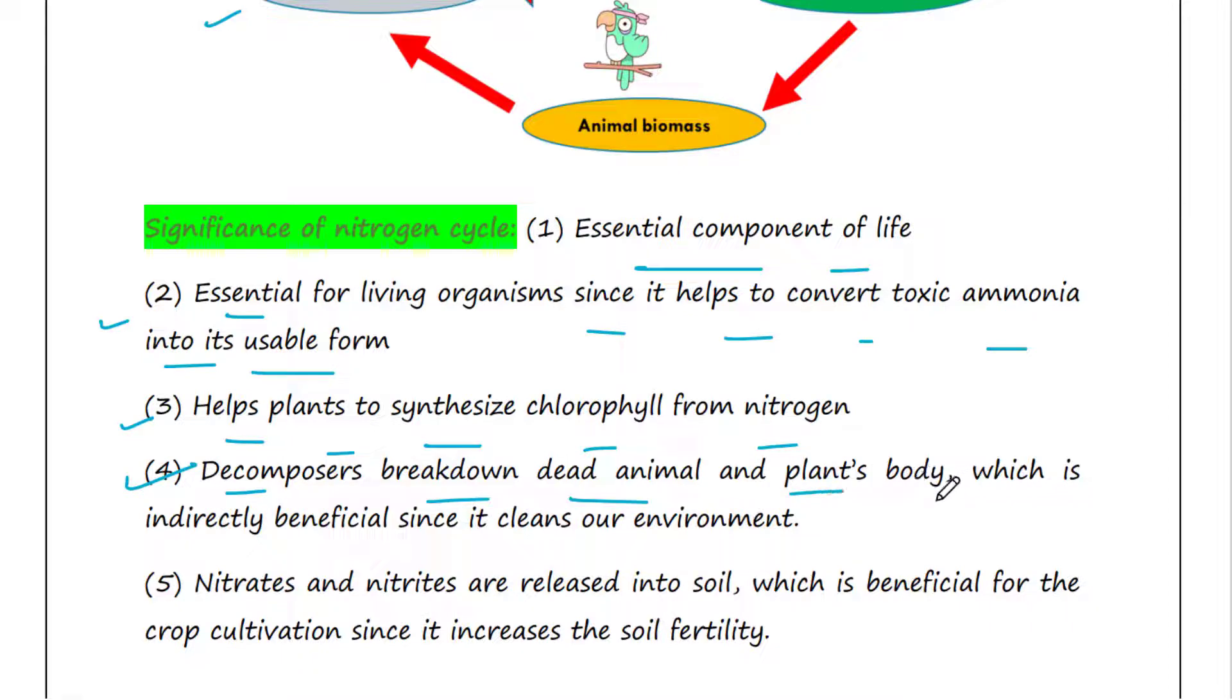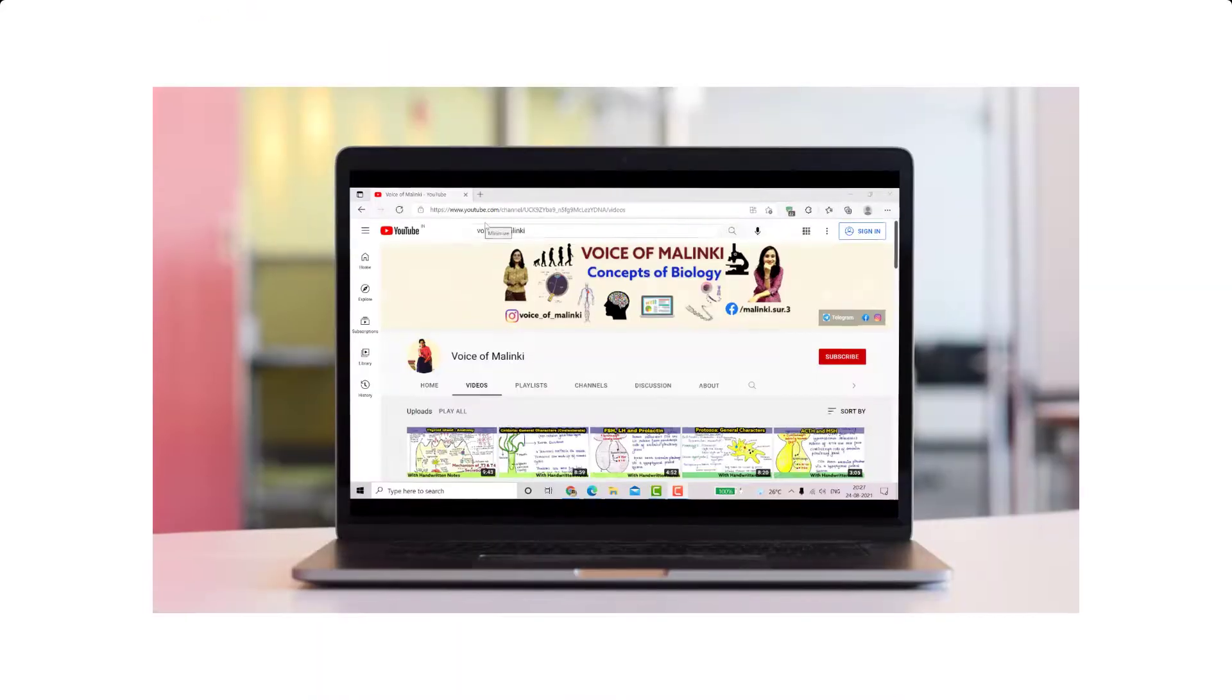Next, decomposers break down dead animal and plant's body, which is indirectly beneficial since it cleans our environment. Next, nitrates and nitrites are released into soil, which is beneficial for crop cultivation since it increases the soil fertility.